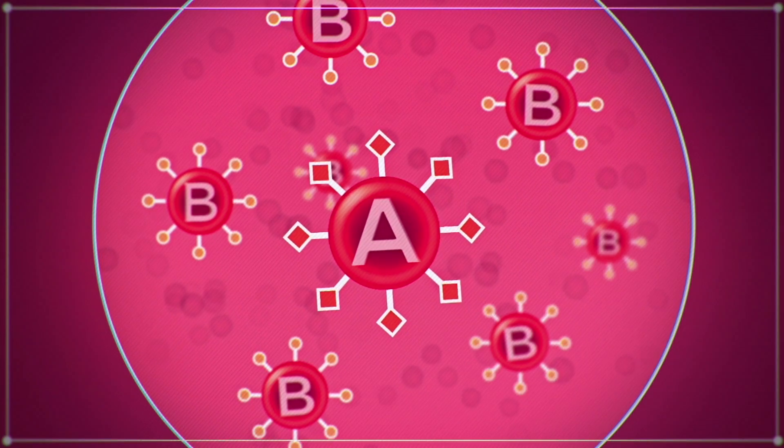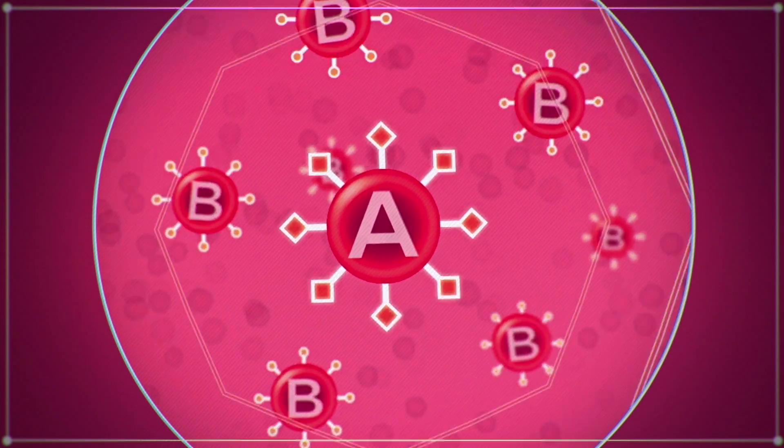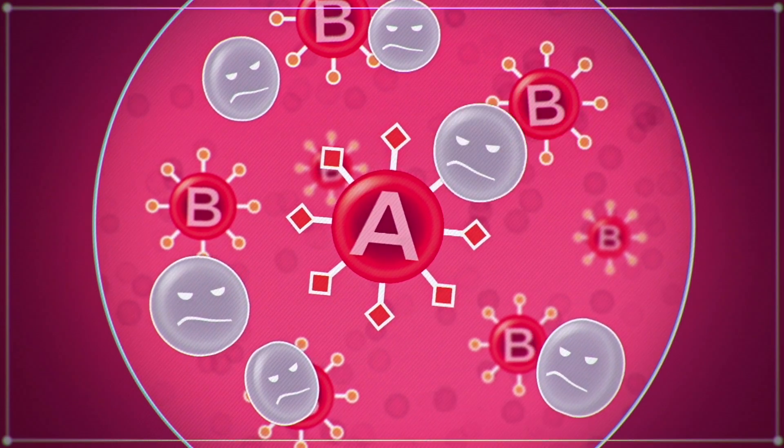If you're given the wrong blood with the wrong molecules, your immune system sees it as an intruder and goes on the attack.